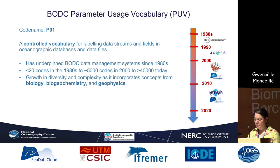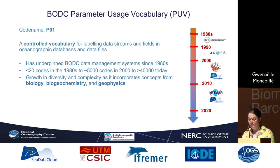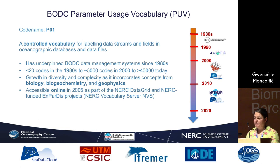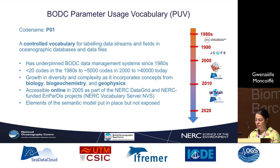Its growth in number was accompanied with a growth in diversity and complexity as it incorporated concepts from biology, biogeochemistry, and geophysics — in particular with the JGOFS program in the 1990s. It's been accessible online since 2005 as part of the NERC Data Grid and the NERC-funded SeaDataNet and BODC projects, which saw big developments and the release of our first two versions of the NERC Vocab Server. At the time, elements of the semantic models were put in place but not exposed externally — they were just used for internal management.